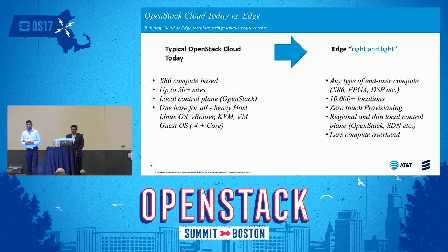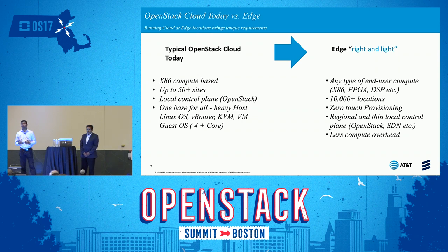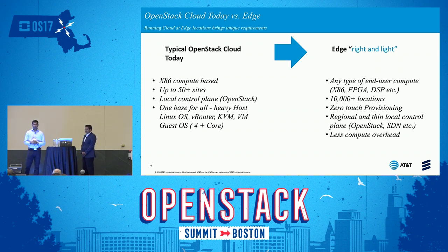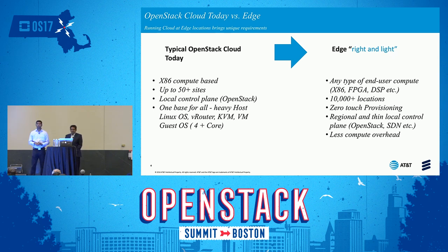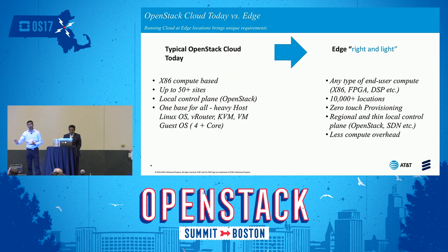This slide talks about what we have with typical OpenStack cloud deployment versus what we need from an edge perspective. Currently OpenStack supports x86 compute, 50-plus sites, a local control plane installed in the data center, and a generic virtualization layer like KVM. This will not work for edge. The edge has to be 'right and light' — that is the key requirement.